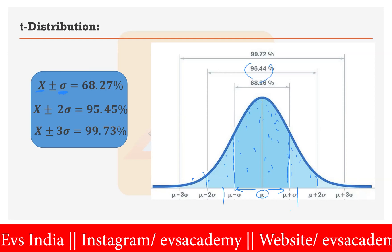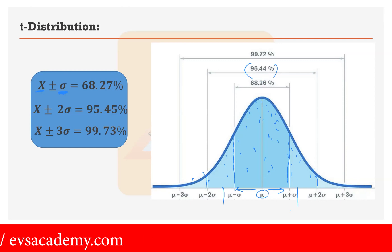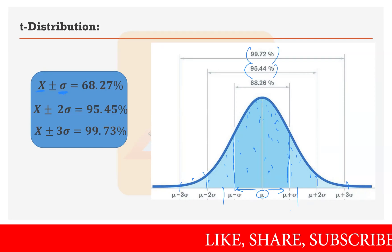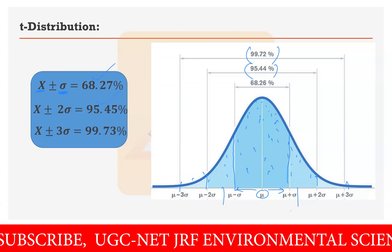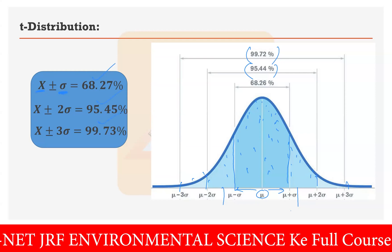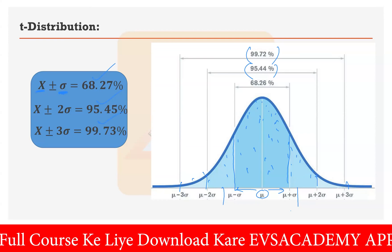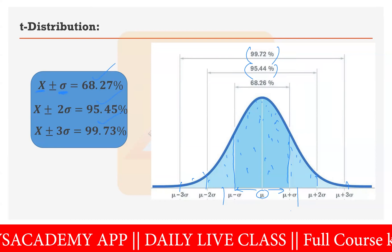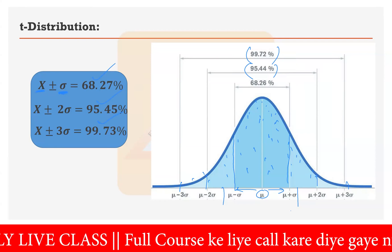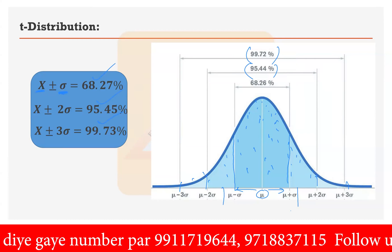When you are moving plus or minus two sigma from the mean, you cover approximately 95.44% of data. Then plus or minus three sigma covers 99.72% — that is mu plus or minus three sigma. You have to remember these percentage values as they can be asked directly in the examination: what is the value of x plus or minus two sigma? The options would be 68.27%, 95.45%, or 99.73%, so you need to remember which standard deviation corresponds to which percentage.